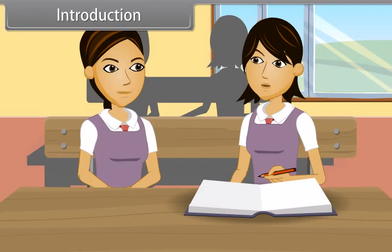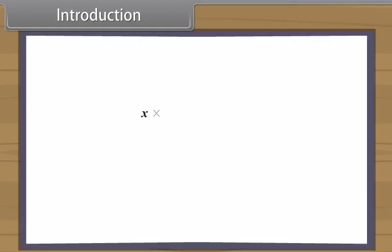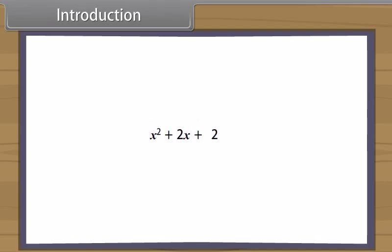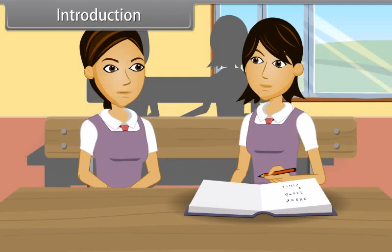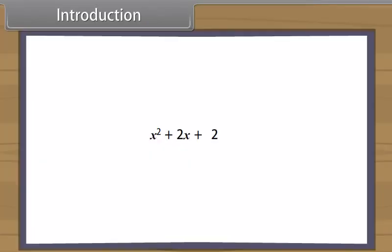Let me write somewhere. There is a number X. If we multiply X by itself, we get X square. So you have X square books, and I have two times the number X, that is 2X, and our friend has two books. Then their sum gives this expression. Do you know what we call this expression? No, but I find it very interesting. This is called a polynomial.